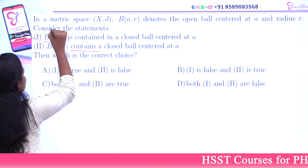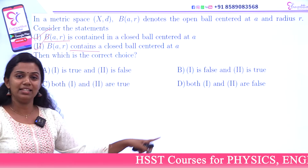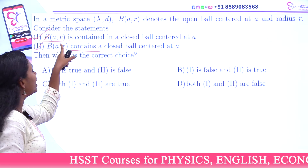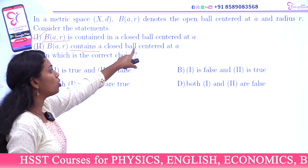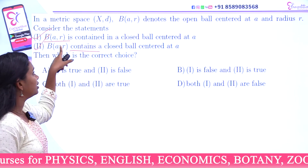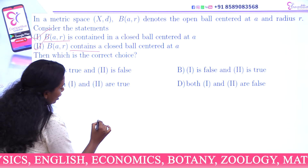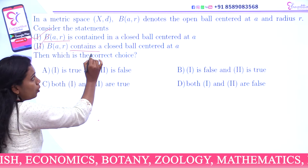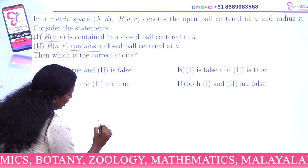We will analyze these two statements correctly. Let's look at the first statement. B(a, r) is contained in a closed ball centered at a. Let's visualize it. B(a, r) is contained in a closed ball centered at a and radius r.